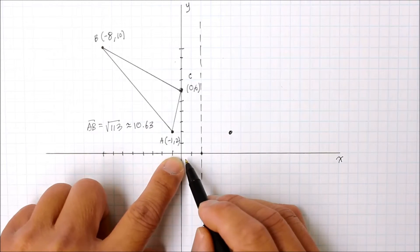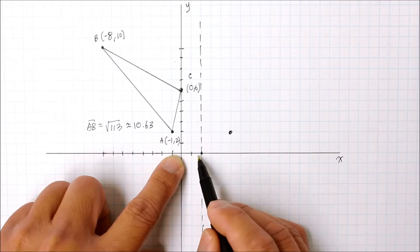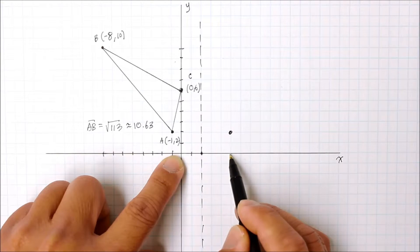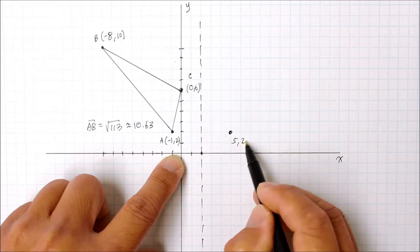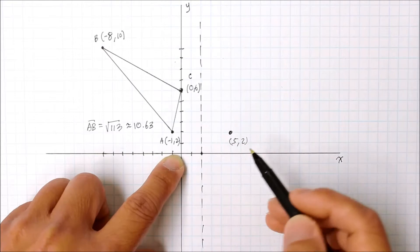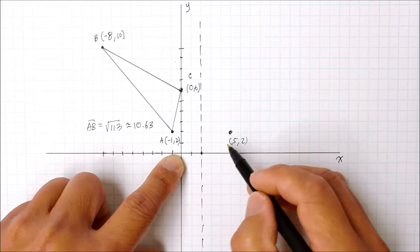What's the new coordinate for this? From the origin, it's 1, 2, 3, 4, 5. The y value does not change, so this is 5 and 2. That's the new A, but we won't label that as A yet.